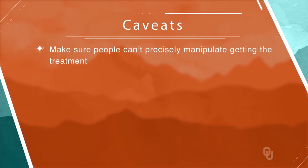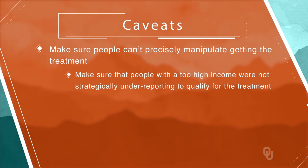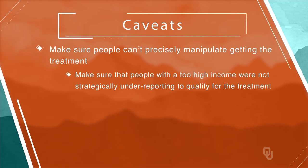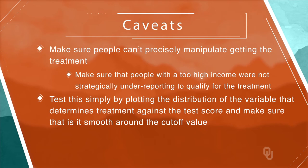The first thing is to make sure people can't precisely manipulate the treatment. For example, if the treatment was contingent on having an income below a certain threshold, we'd want to make sure that people with too high income were not strategically under-reporting to qualify for the treatment. This is important because we are assuming that people on either side of the threshold are essentially the same. We can test this simply by plotting the distribution of the variable that determines treatment against the test score and making sure that it is smooth around the cutoff value.